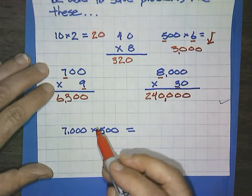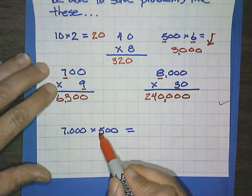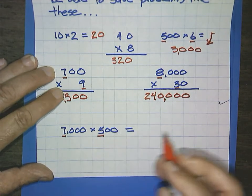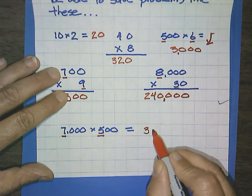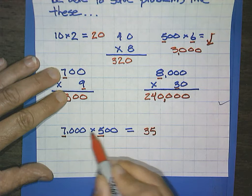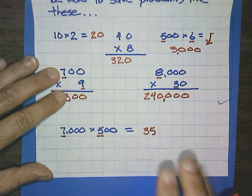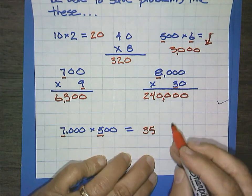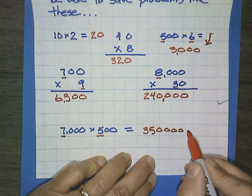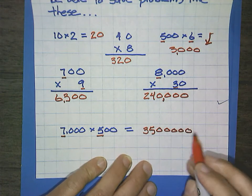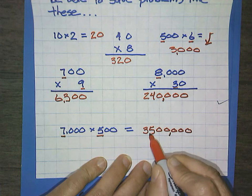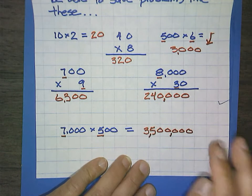And 7,000 times 500. 7 times 5 is 35. I'm going to count my zeros, 1, 2, 3, 4, 5. And I'm going to write my zeros, same amount, five zeros. 1, 2, 3, 4, 5. And again, we put in our commas every three digits. And so we get 3,500,000.